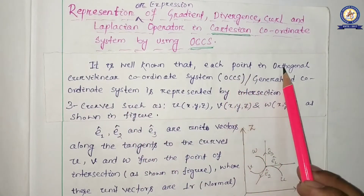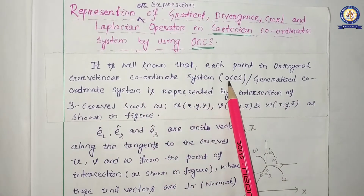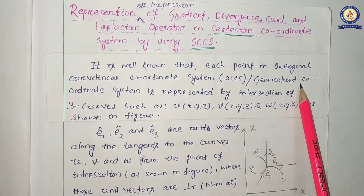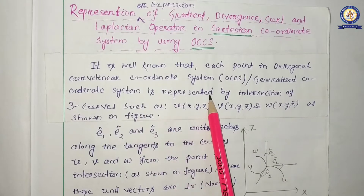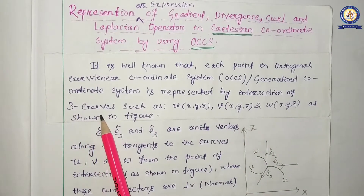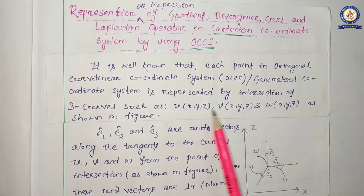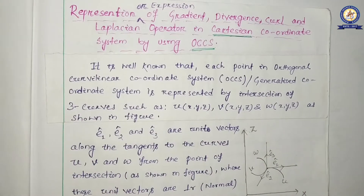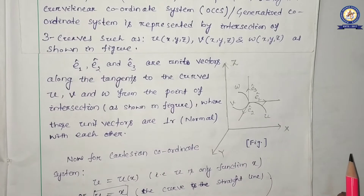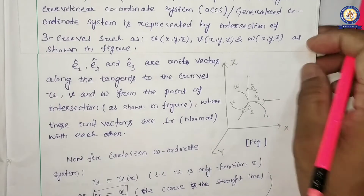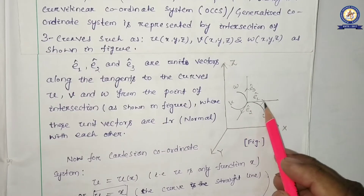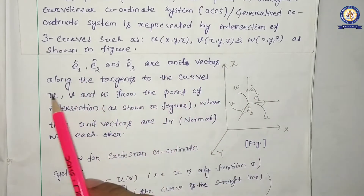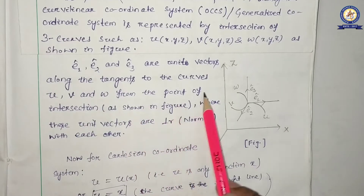It is well known that each point in the orthogonal curvilinear coordinate system — that is your OCCS, or orthogonal curvilinear coordinate system, also called the generalized coordinate system — is represented by the intersection of three curves: u as a function of xyz, v as a function of xyz, and w as a function of xyz, as shown in the figure we discussed elaborately.